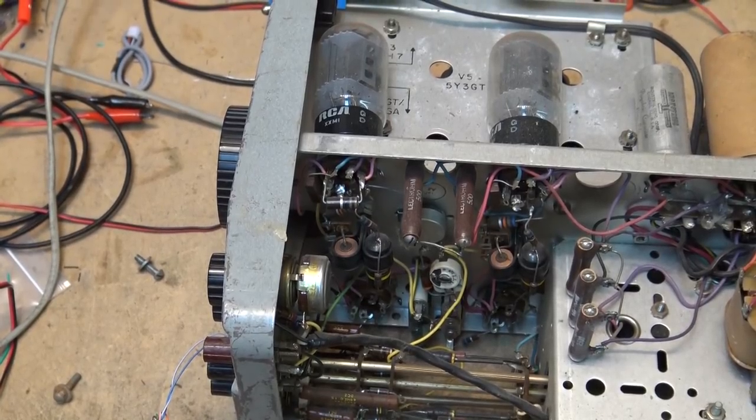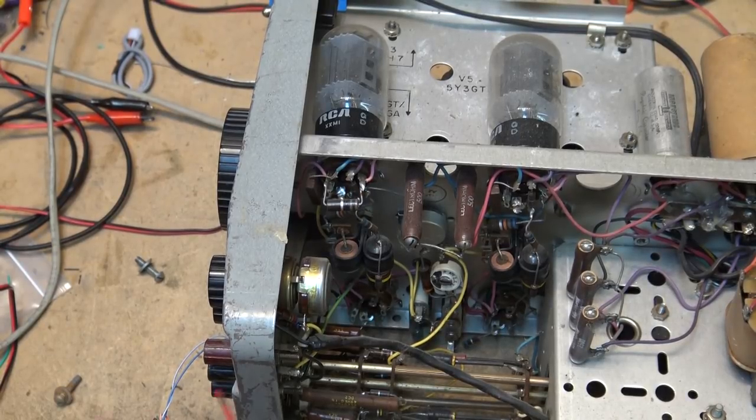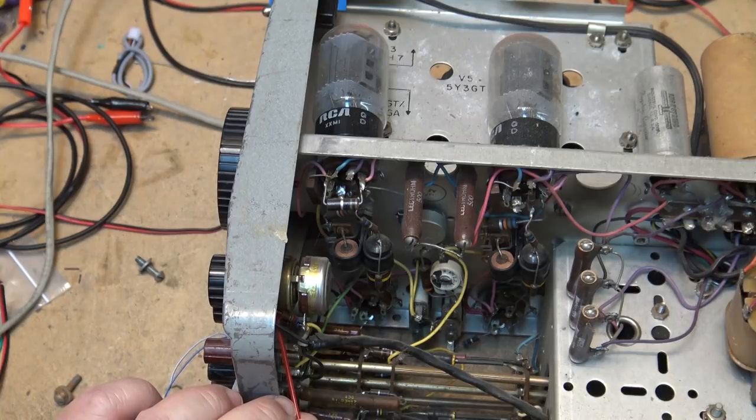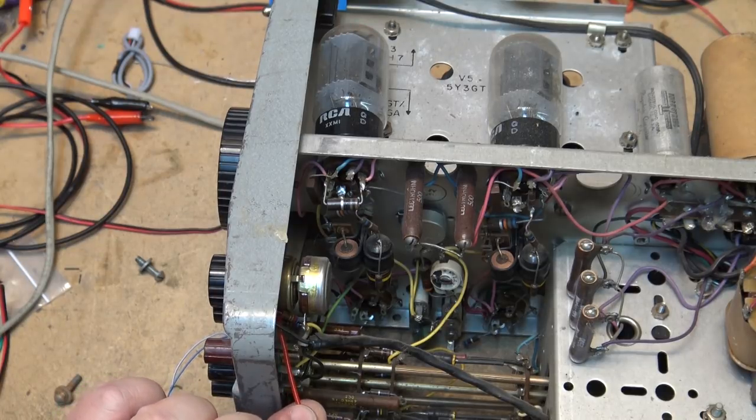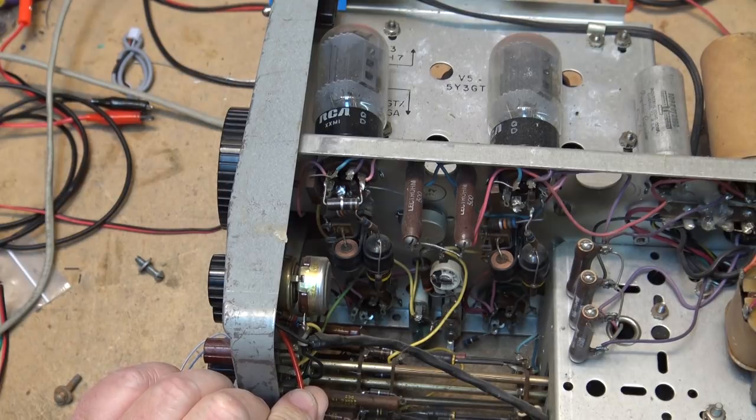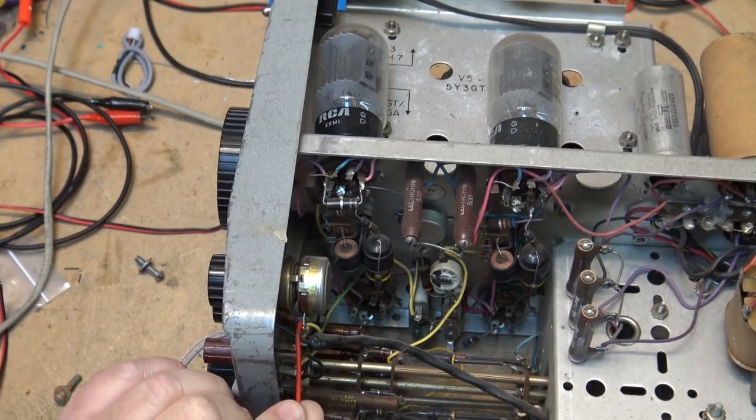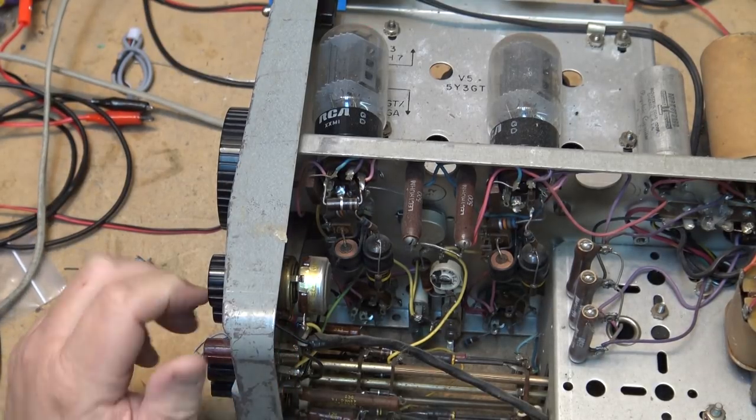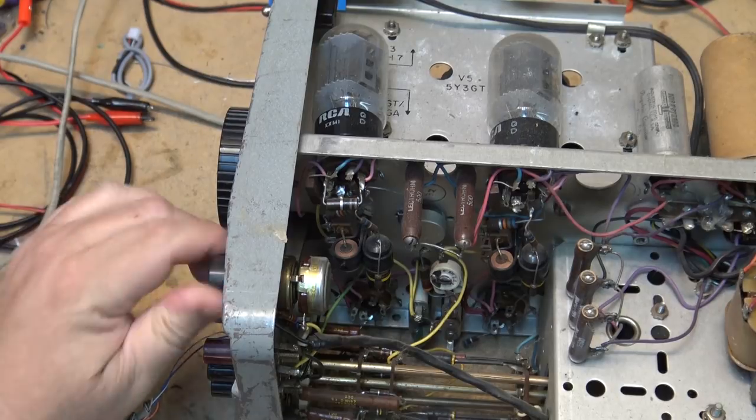Now one thing I want to do is I just want to clean the output control because it's kind of dirty. I can hear it when I turn it up and down. So I want to get some spray into this control without getting it everywhere. Although this control might be challenging to get spray into because it looks like it's sealed.